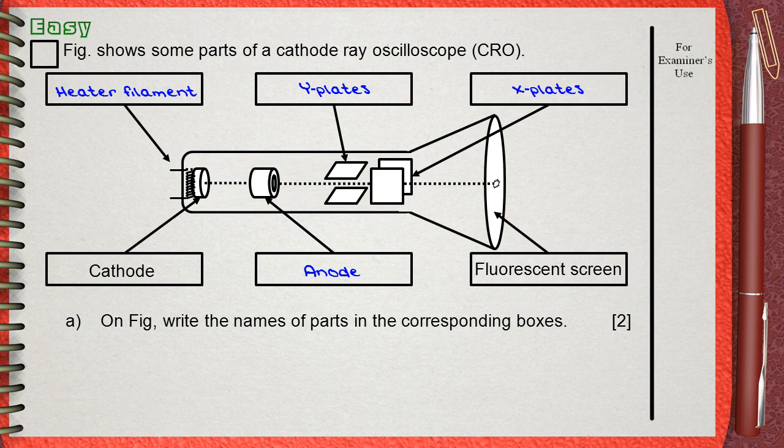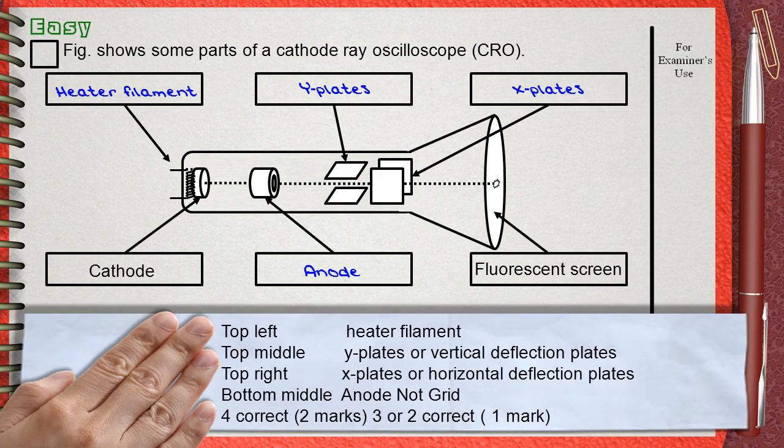Two marks for this question. Top left: heater filament. Top middle: Y plates, or vertical deflection plates. Top right: X plates, or horizontal deflection plates. Bottom middle: anode.